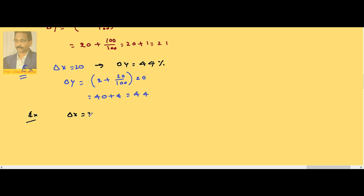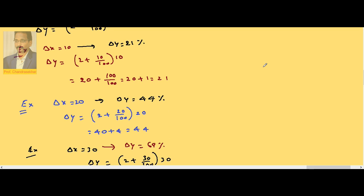Example 30: if you use this relation, 2 plus 30 by 100 into 30, it is 60 plus 9 equals 69—that is the present problem. Delta y is 69 percent, so you can generalize this and take a relation like this whenever y proportional to x square is taken.